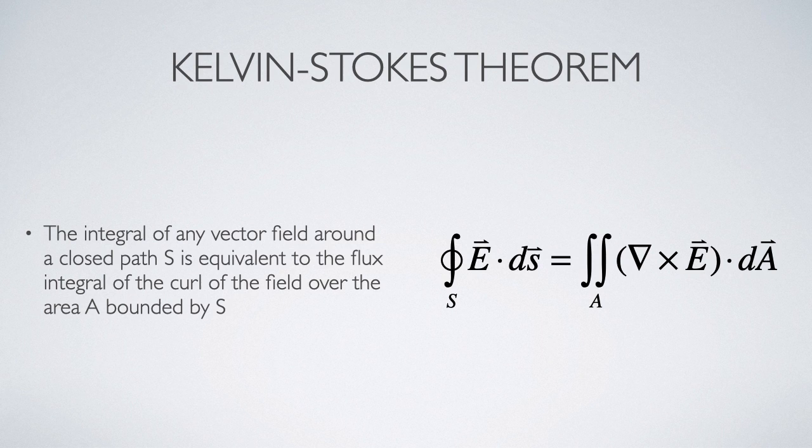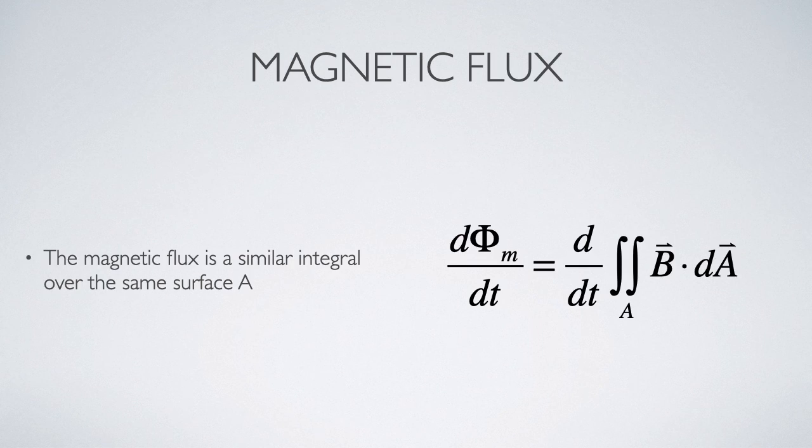So it gives us an integration over area that looks very much like a flux calculation. We know the definition of flux is this integral of B dot dA over an entire surface. However, the law of induction features the derivative of the flux with respect to time, so what we have to do is do that flux integration and then differentiate it with respect to time afterwards.